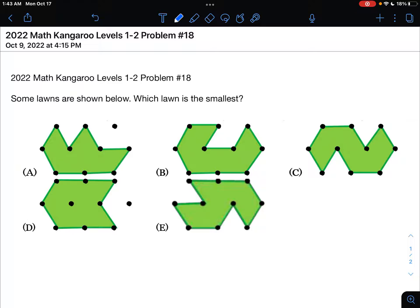So, one way we can do this is to look at each answer choice, draw lines to create equal triangles, and then count the number of triangles that are part of each lawn and see which has the greatest number.